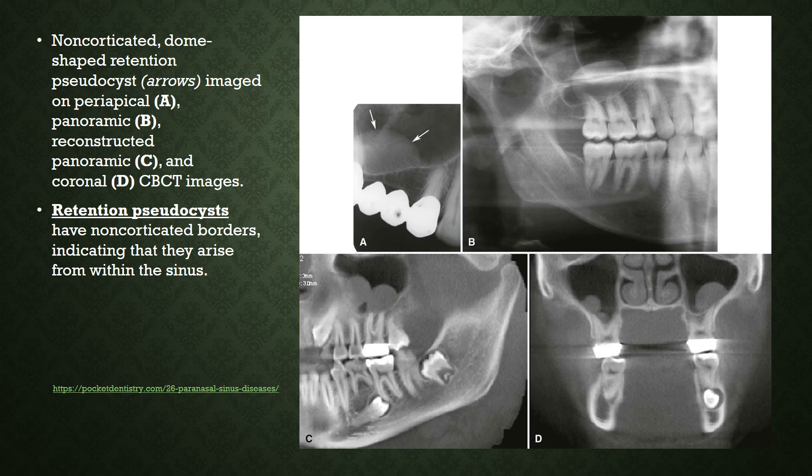Views of the retention pseudocyst phenomenon can be clearly visualized as a radio-opaque soft tissue mass seen in a periapical radiograph or a maxillary sinus radiograph. This is also seen in a CBCT-generated panoramic image as well as in the CBCT axial and coronal images.